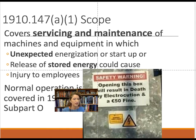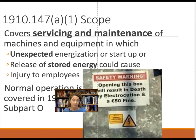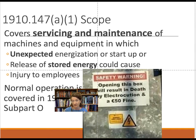The scope of lockout-tagout differs from machine guarding. Machine guarding applies when the machine is running during normal operations — for example, using a saw to cut something. Lockout-tagout covers the servicing of equipment, when there's maintenance going on and equipment must be completely shut down. It prevents the unexpected re-energization of machinery, as well as the release of any stored energy.